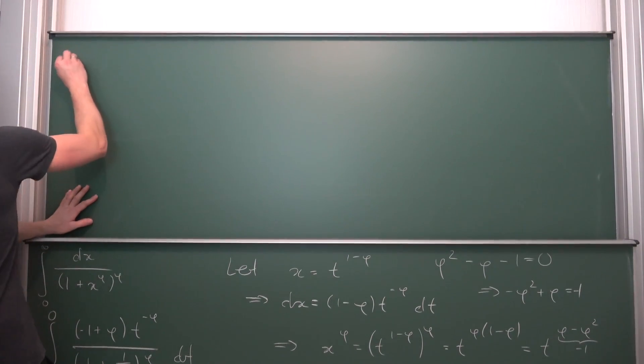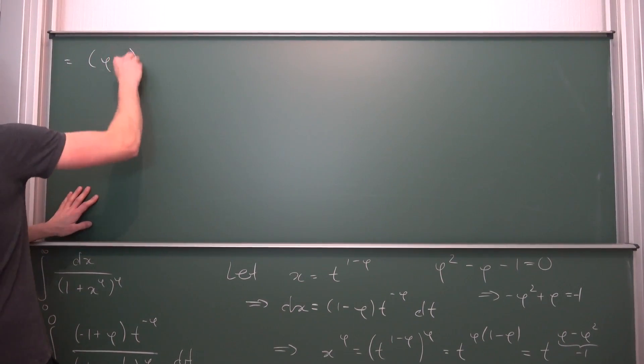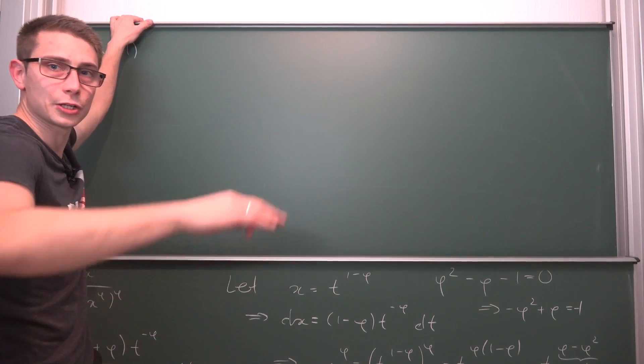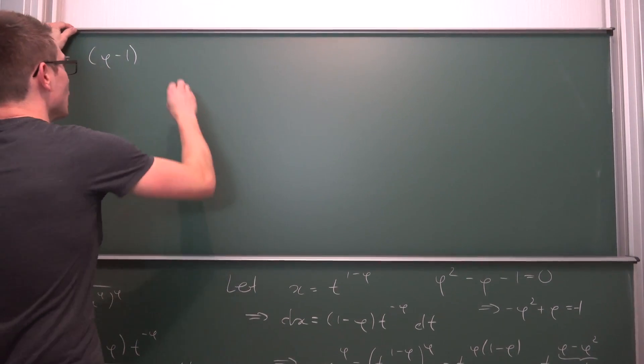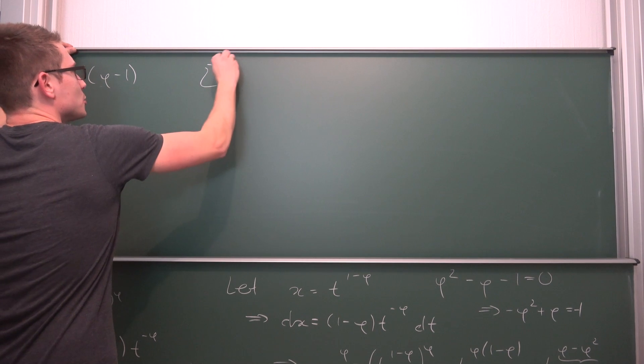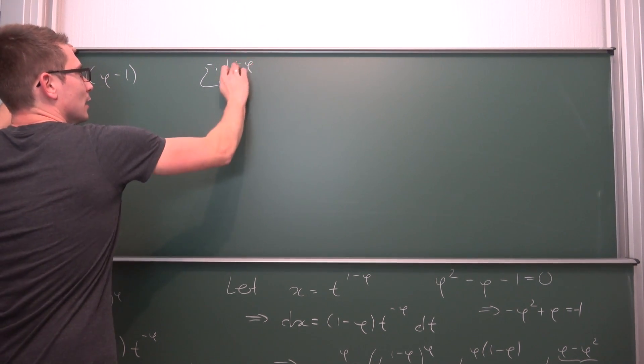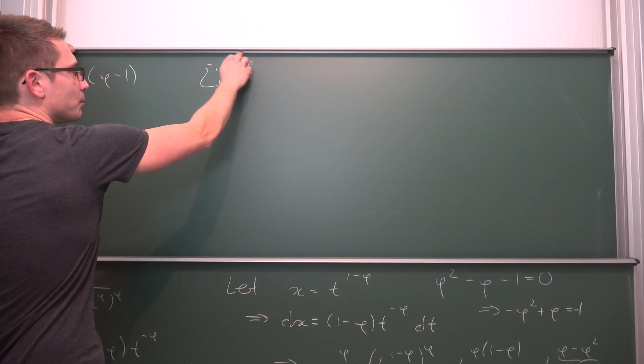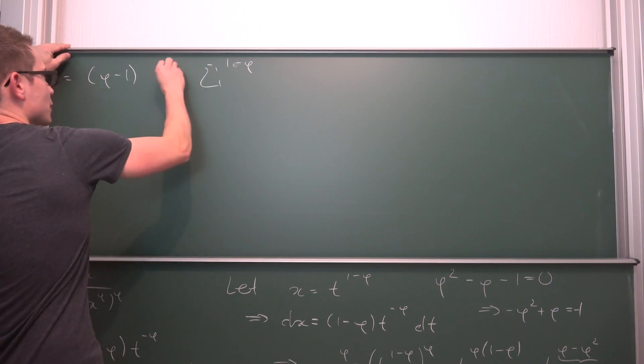What we are going to get is phi minus 1. Then we are going to increase the exponent by 1, so this is going to give us sigma to the 1 minus phi. Also we are going to divide the whole expression by 1 minus phi.